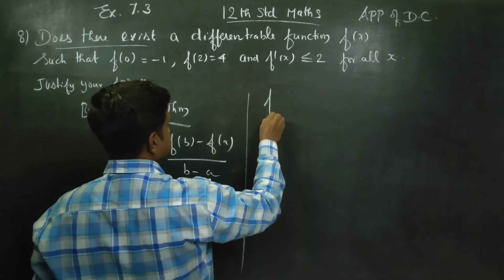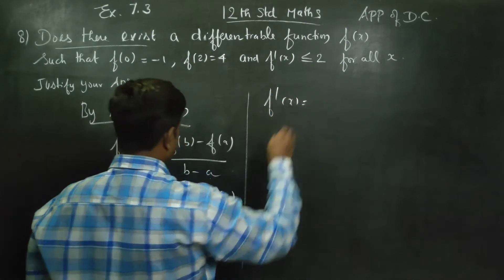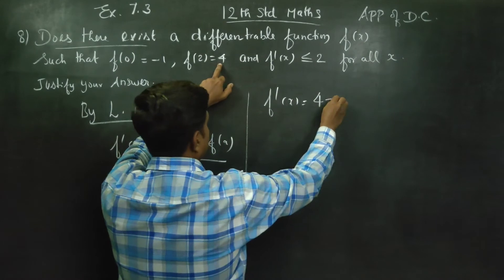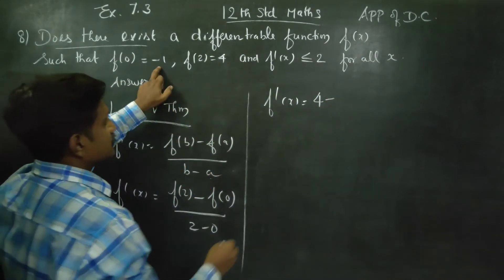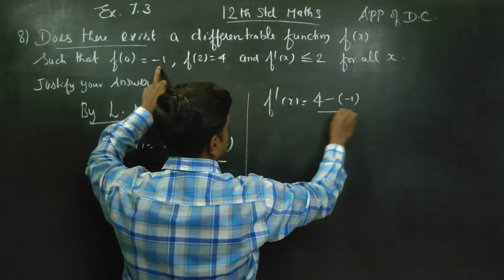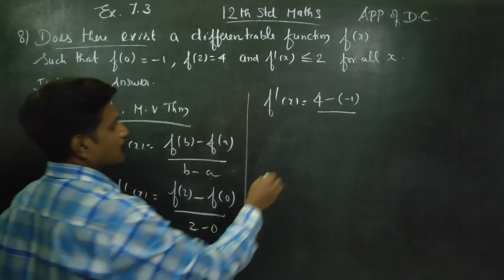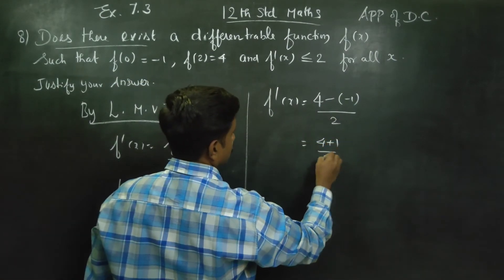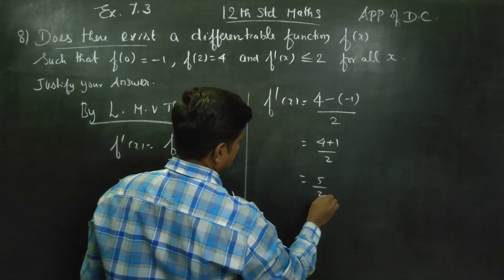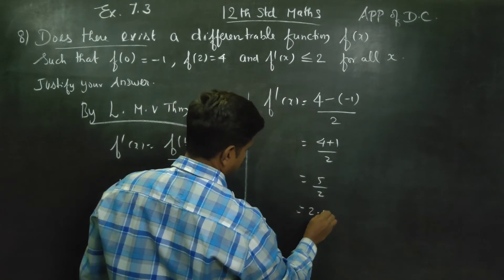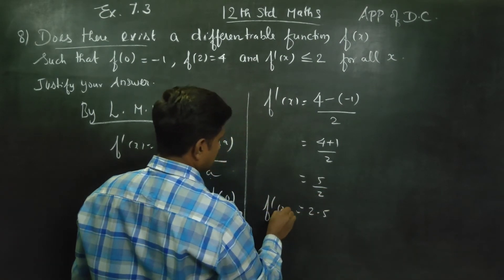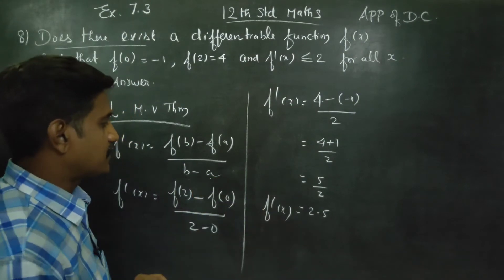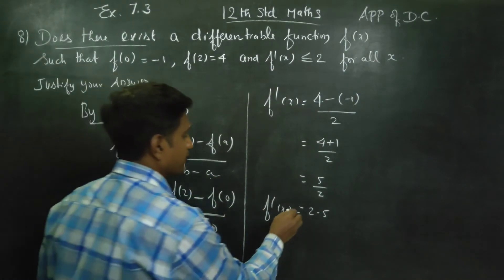f dash x is equal to f of 2 minus f of 0, divided by 2 minus 0. f of 2 is equal to 4 and f of 0 is equal to minus 1. So f dash x equals 4 minus minus 1, divided by 2, which is 4 plus 1 by 2, giving us 5 by 2. The answer is 2.5. So f dash x is equal to 2.5.